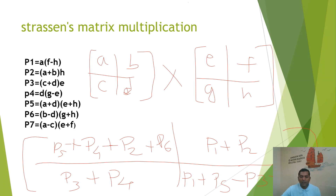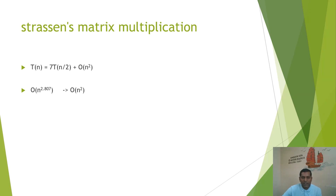Looking at P1 through P7, these are the 7 subproblems. In the previous matrix multiplication example, we had 8 recursive multiplication subproblems; here we have only 7. The 8 subproblems are reduced to 7. Writing the recurrence equation: T(N) = 7T(N/2) + O(N²). Solving this with the standard master method gives O(n^2.807), which is approximately O(n²) — a significantly reduced time complexity compared to the previous O(n³) result.